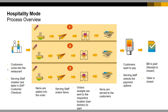For hospitality mode, this is the core business process I will cover. The customer walks into the restaurant and the waiter or waitress allocates a table. The customer orders food and drinks. This information is sent to the kitchen or the bar. This happens multiple times and when the customer is finished and pays, the transaction is complete.